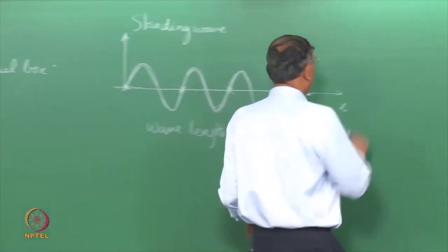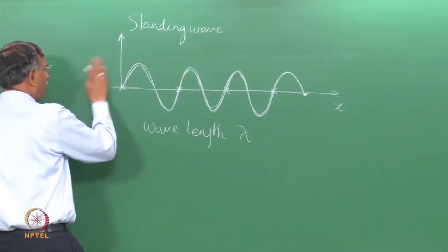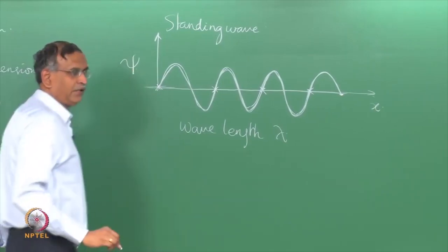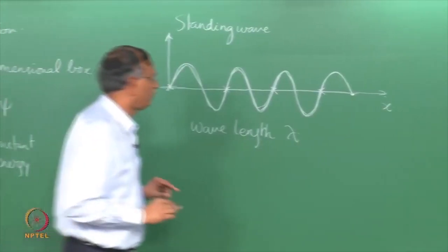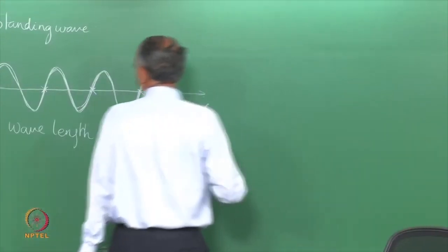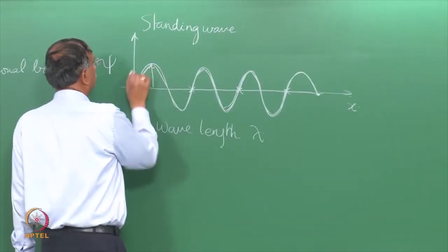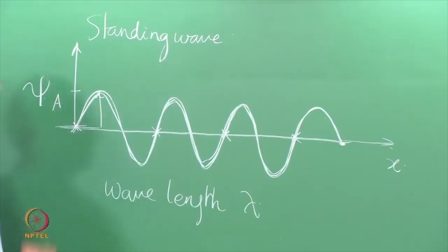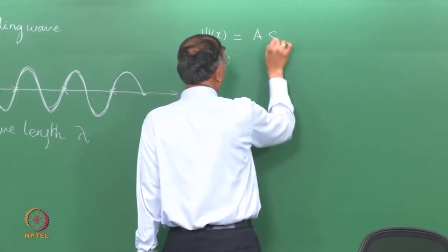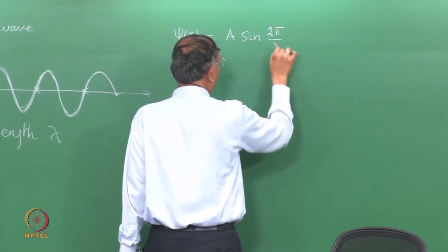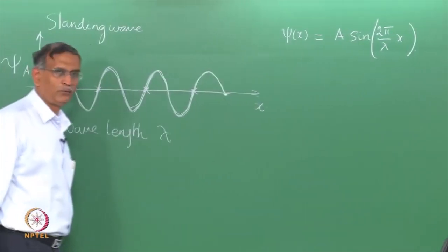The equation for the standing wave amplitude — let us call it psi, consistent with what we have here — where the maximum amplitude is A. The wave function psi of x is written as A·sin(2π/λ · x). This is something familiar for a standing wave.